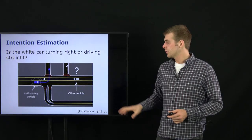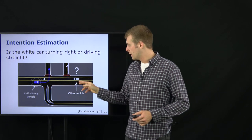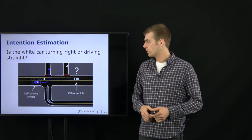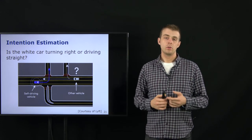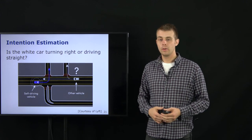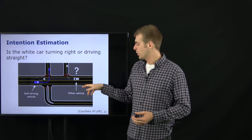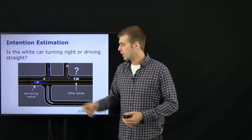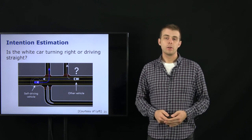Starting with intention estimation: here you see a situation with a self-driving vehicle in purple wanting to do a left turn, and another vehicle in white that might turn right or go straight. Our goal is to infer this high-level behavior — is the white car going to turn or continue driving straight? If we know this, we can adapt our own planning. If we estimate the white car will do a right turn with high probability, we can make our left turn; if it is going straight, we need to yield until it passes.